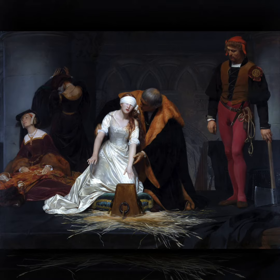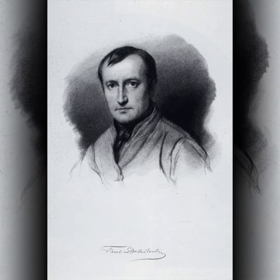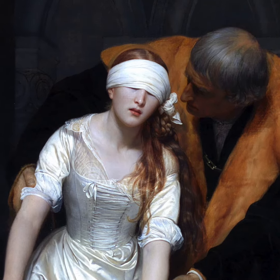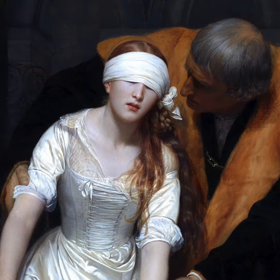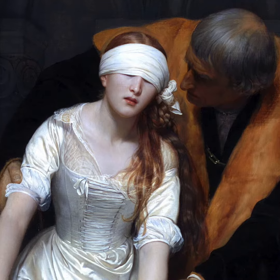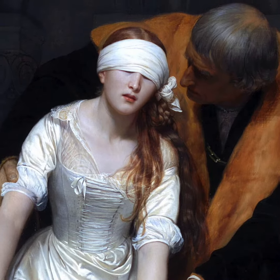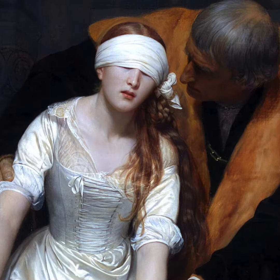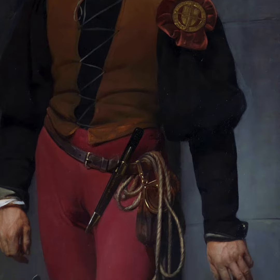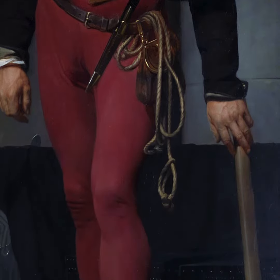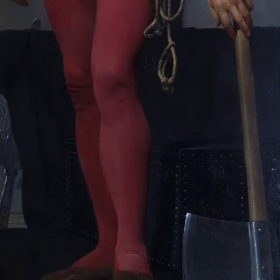This is the Execution of Lady Jane Grey, painted by Paul de la Roche in 1833. Lady Jane Grey reigned as Queen of England for nine days in 1553, until deposed by supporters of Catholic Queen Mary. She was beheaded at Tower Hill early the following year, aged 17.